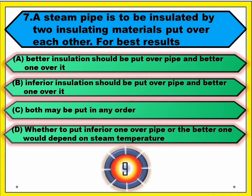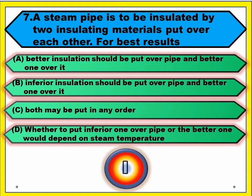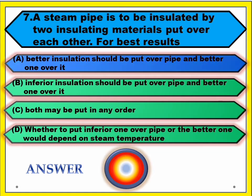Question number seven: a steam pipe is to be insulated by two insulating materials put over each other. For the best results — answer: better insulation should be put over the pipe and the poorer one over it.